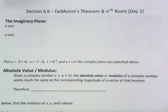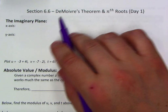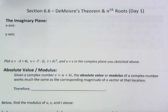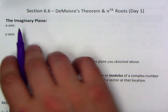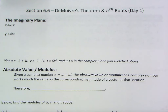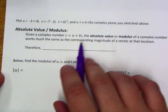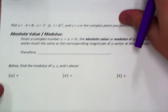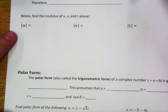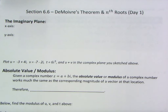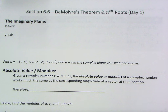Welcome to section 6.6, where we're going to be taking a look at de Moivre's theorem and nth roots. That's actually a little bit of a misnomer — while this is the title of the section, here in day one we're really going to be focusing on a lot of the basics, the foundational work of complex numbers. This is going to include the imaginary plane, how we manipulate the value i, how we write complex numbers, the absolute value and the modulus, and finally polar form towards the end.